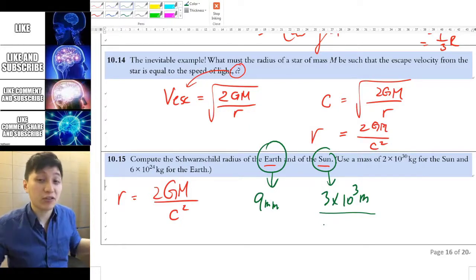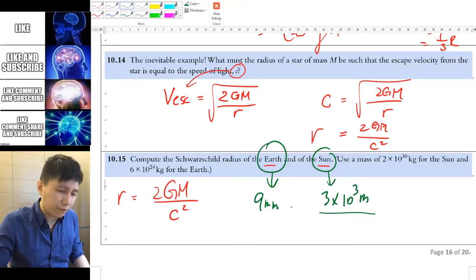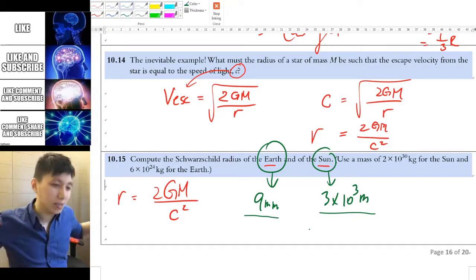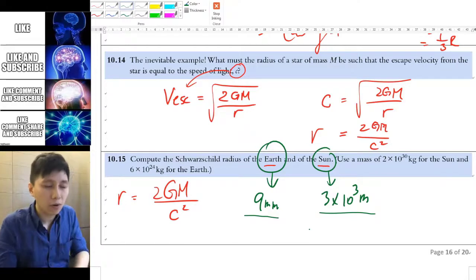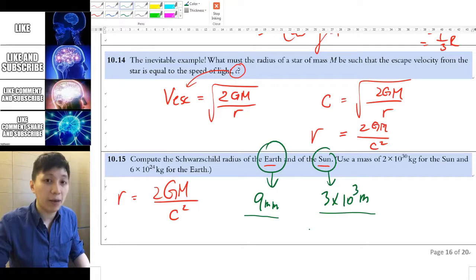And 3km is actually very small. And for the earth is even smaller, it's going to be 9mm. So imagine you try to squeeze the earth, the whole earth into a tiny ball that is 9mm only. Then the earth could be a black hole.